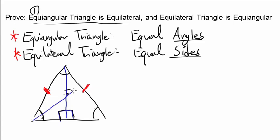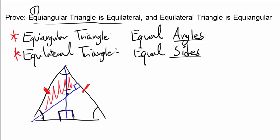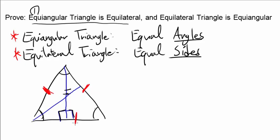Now let's draw another perpendicular. In this case, you get two triangles once again that you can prove to be congruent — this one and this one. And since those two triangles are congruent, you know this side and this side have to be the same. So in the end, all three sides are the same, meaning the equi-angular triangle is equilateral.